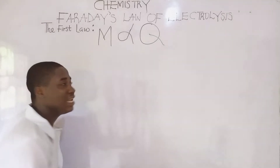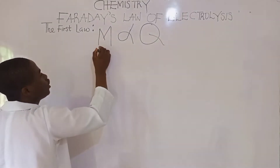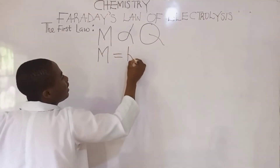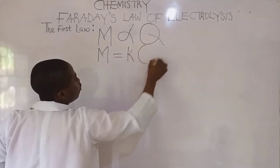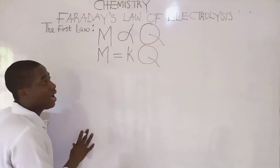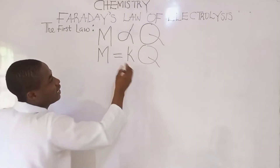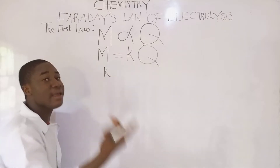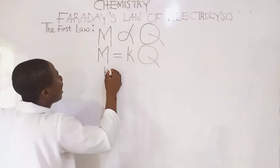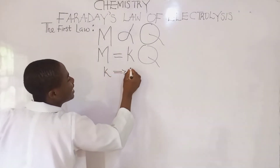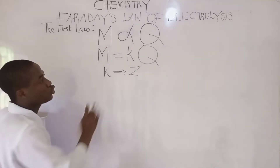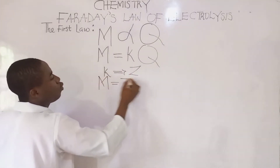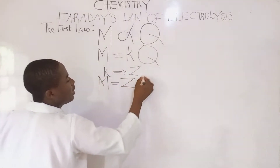Bringing in a constant, this equation changes to M, which is mass, is equal to KQ. And it must be noted that this K will be changed to the symbol Z. So we write it to be mass is equal to ZQ.